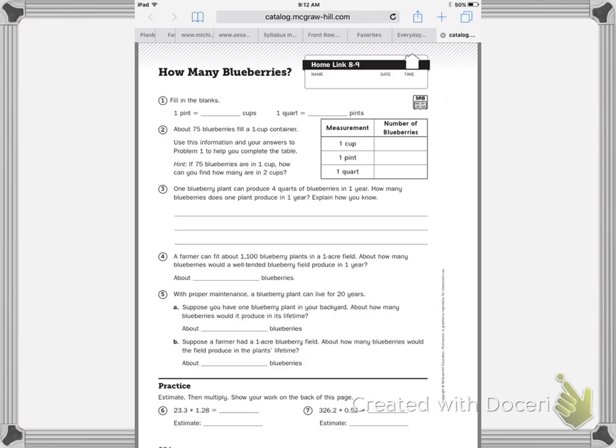How many blueberries? Home link 8-9. First it says to fill in the blank. So one pint equals two cups. One quart equals two pints.